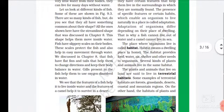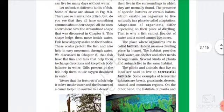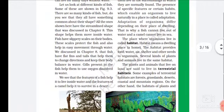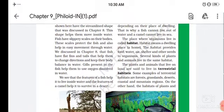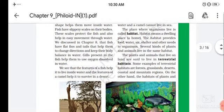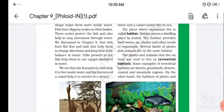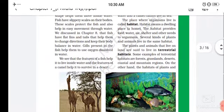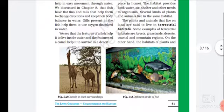These fish have scales on their bodies. These scales protect the fish and also help in easy movement through water, as discussed in Chapter 8. Fish have flat fins and tails that help them change direction and keep their bodies balanced in water. Gills present in fish help them use oxygen dissolved in water.